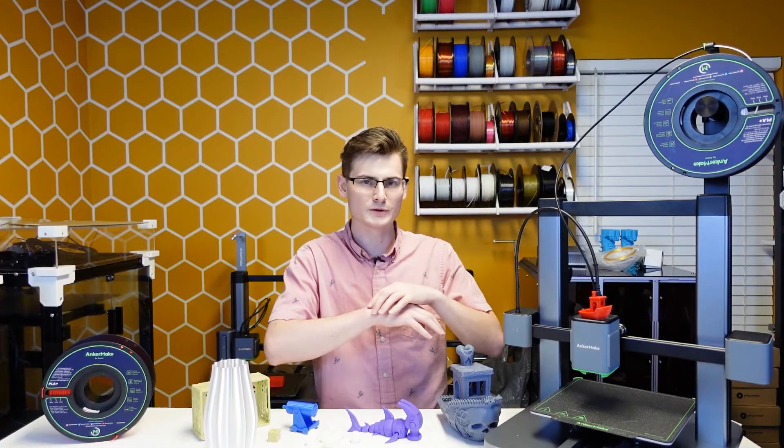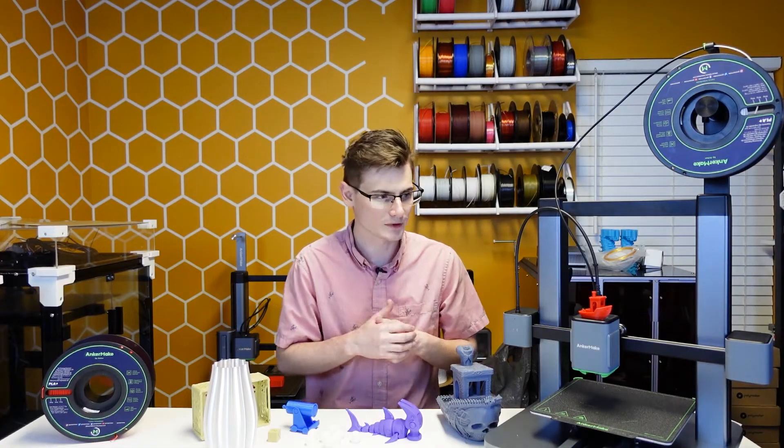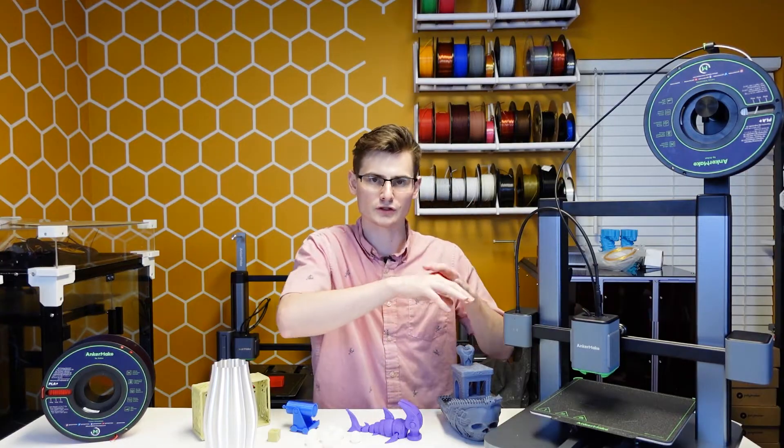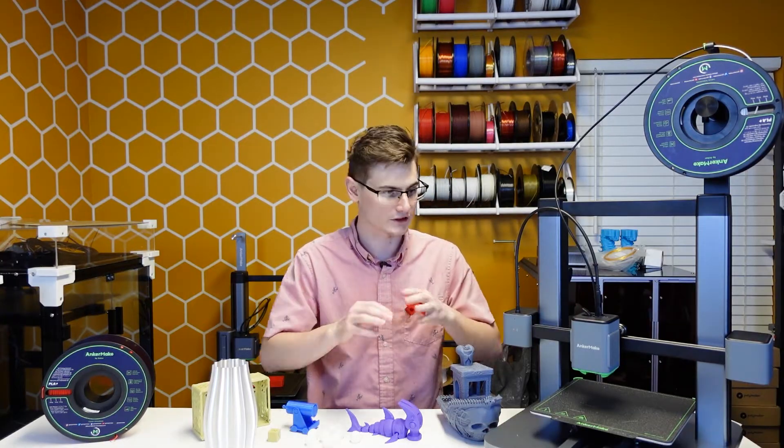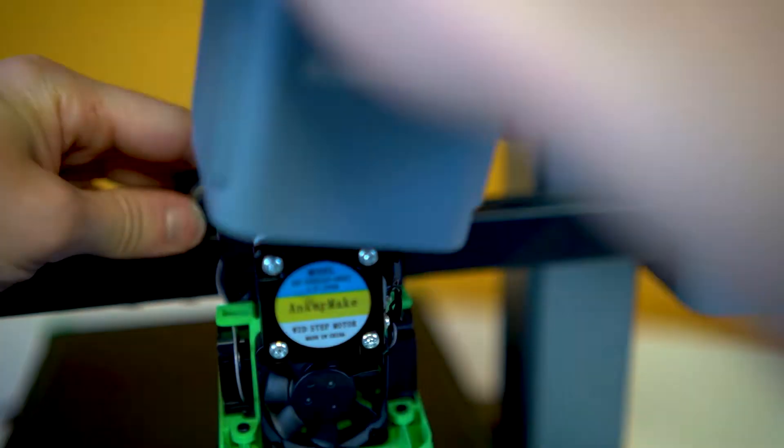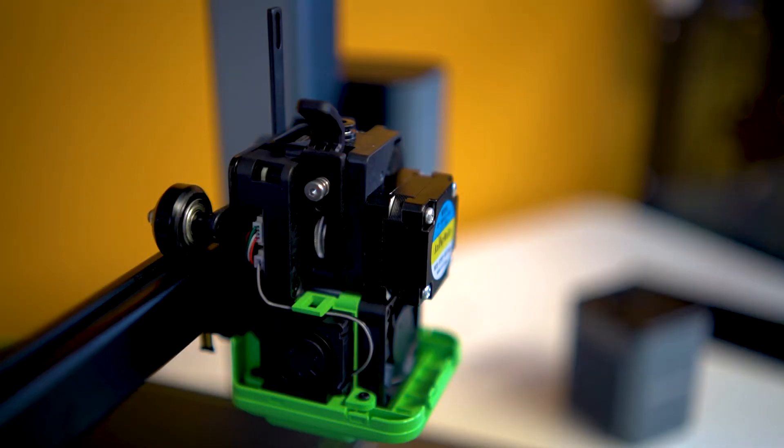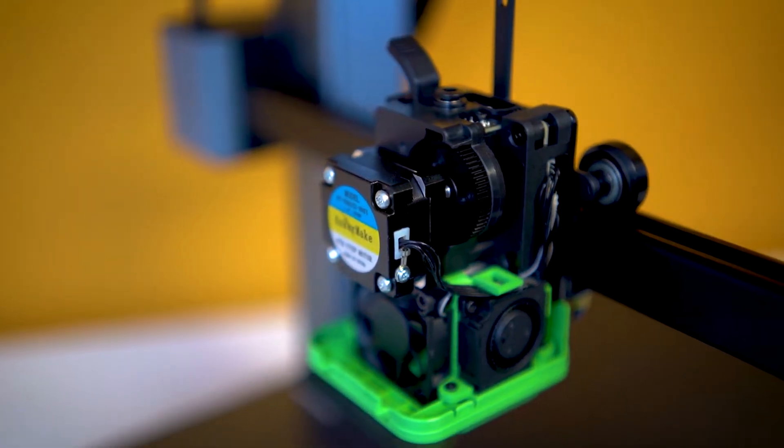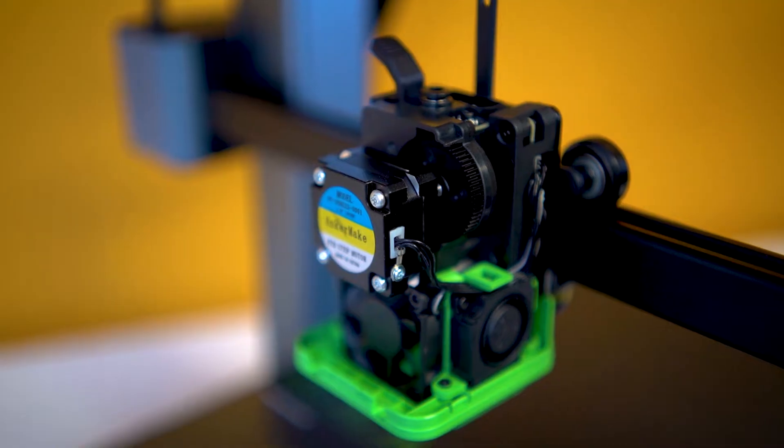The hotend on the M5C comes with two very significant improvements. The first one is that the fan shroud can now be removed without unscrewing anything. No screwdrivers at all. You simply grab the fan shroud and lift up, and it comes off. This is convenient for maintenance because if you have clogs, you can get them out very quickly, and if you need to change the tension on the extruder, you can also do that very quickly.